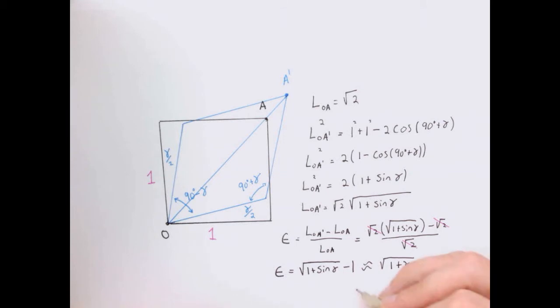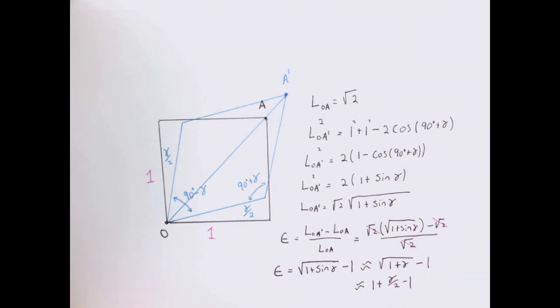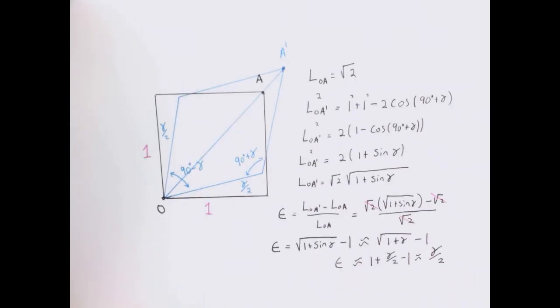What we would find is that we would have this simple relationship here, which means that in the small angle approximation, our strain is just the shear angle divided by two. This is the relationship we're going to use for the rest of our derivation.